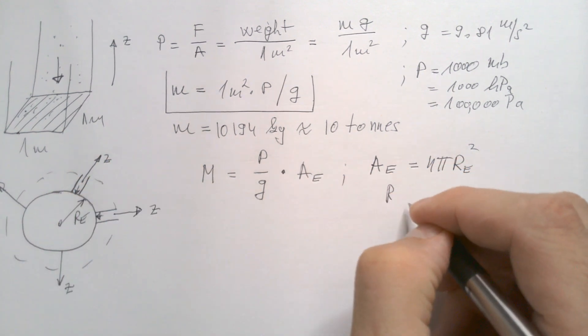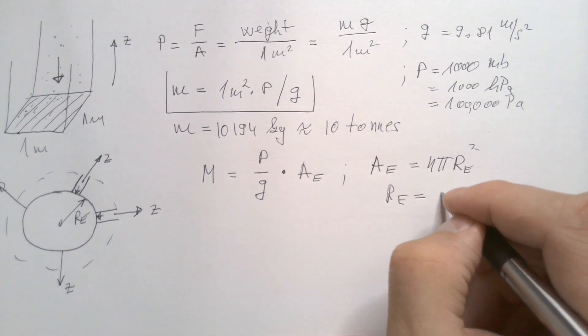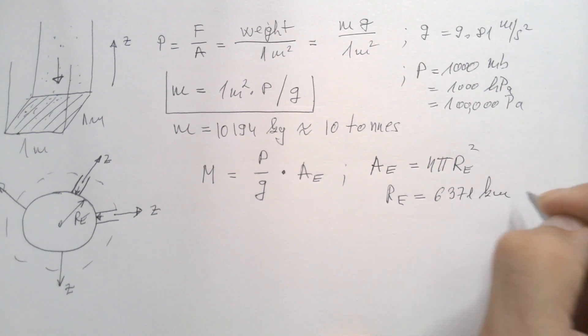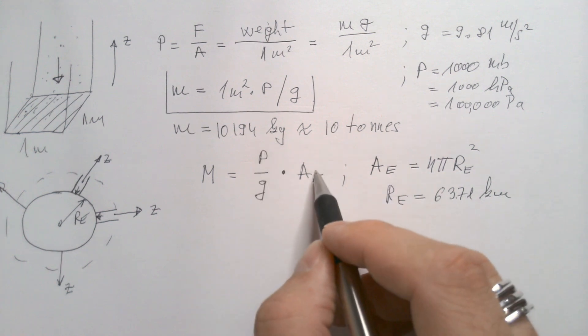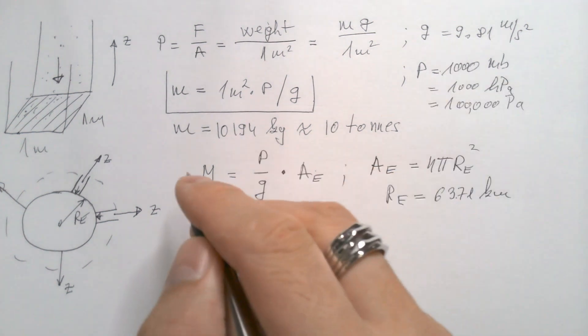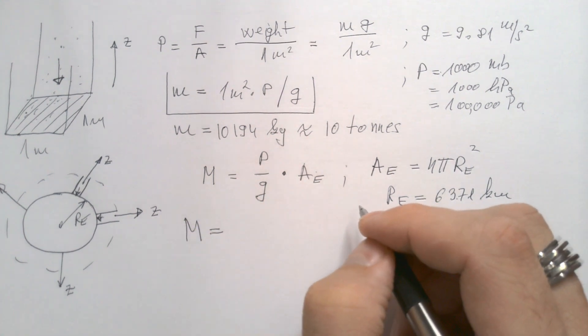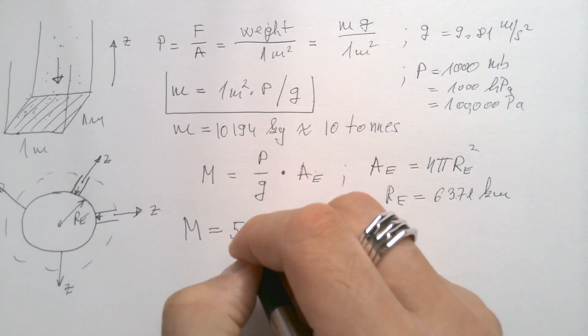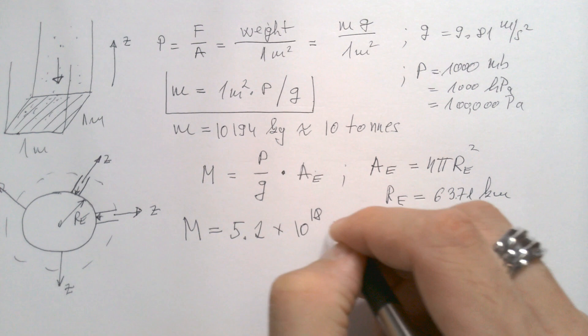We also know that an average value of the Earth radius is 6,371 kilometers. So if you plug in this number over here, and we have pressure and g, you will get that mass of the air, entire atmosphere, is approximately 5.2 times 10 to power 18 kilograms.